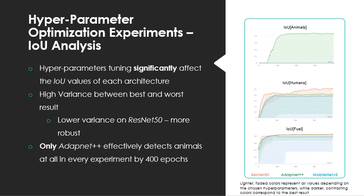In our experiments, it shows that changes in hyperparameters have a huge impact on the general results. The graphics show in a lighter faded colors all the IOU values found depending on the hyperparameters modifications, while the darker contrasting colors show the best results. That is, depending on the hyperparameters chosen, the class humans could not be detected at all at any moment or be a value as closest to 0.4. Same with fuel at the first 100 epochs. Some configurations would not identify fuel at all using MobileNet. Another observation we found was that due to the ResNet-50 robustness, it has the lowest variance. However, only AdaptNet was able to identify animals in any of the possible combinations.